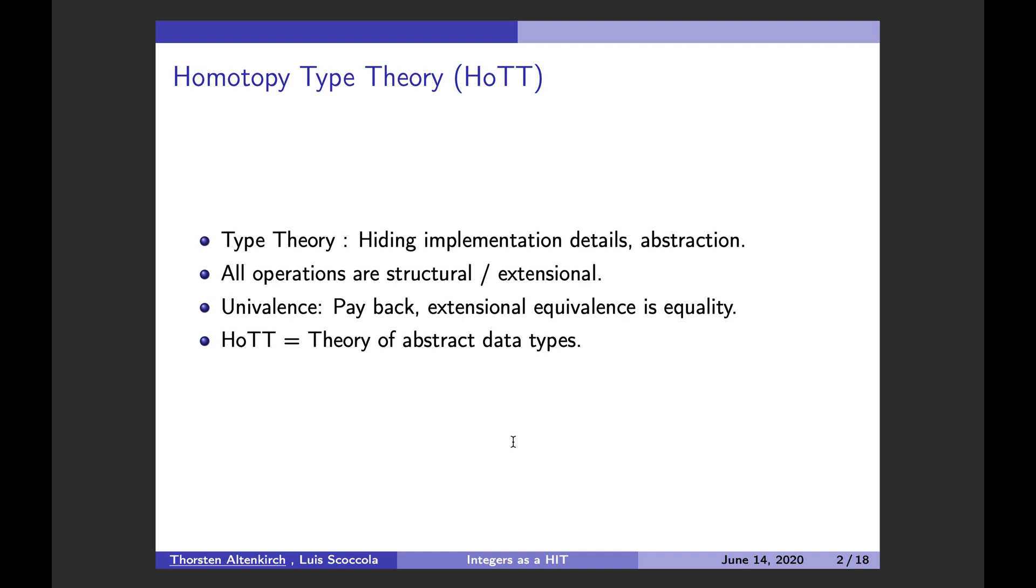By adding the univalence principle, we say, okay, if everything we can see is extensional, then this extensional equality, extensional equivalence is equality. So, in a sense, I would say, HoTT is a theory of abstract data types. By abstract data type, I mean that objects can only be seen from outside. We cannot talk about the implementation. And hence, two objects which behave the same are the same, equal for us. So that's a very, very important idea.